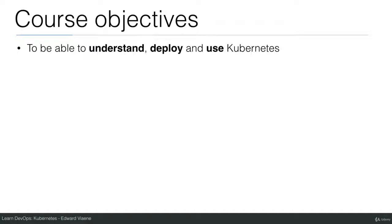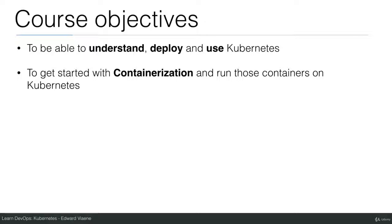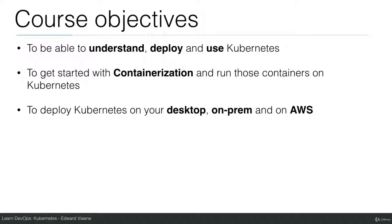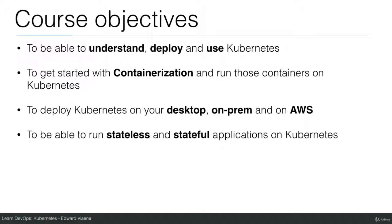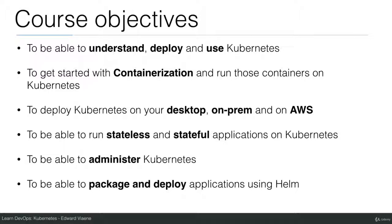Course objectives. After this course, you should be able to understand, deploy, and use Kubernetes. You should be able to get started with containerization and run those containers on Kubernetes, deploy Kubernetes on your desktop, on-prem, and on AWS, run stateless and stateful applications on Kubernetes, administer Kubernetes, and package and deploy applications using Helm.